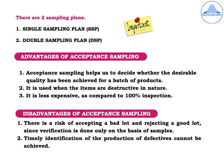There are two sampling plans: a single sampling plan and a double sampling plan, also abbreviated as SSP and DSP. What are the advantages of acceptance sampling? Firstly, acceptance sampling helps us to decide whether the desirable quality has been achieved for a batch of products. It is used when the items are destructive in nature, and it is less expensive compared to 100% inspection. A disadvantage is the risk of accepting a bad lot and rejecting a good lot, since verification is done only on the basis of samples. Also, timely identification of the production of defectives cannot be achieved.